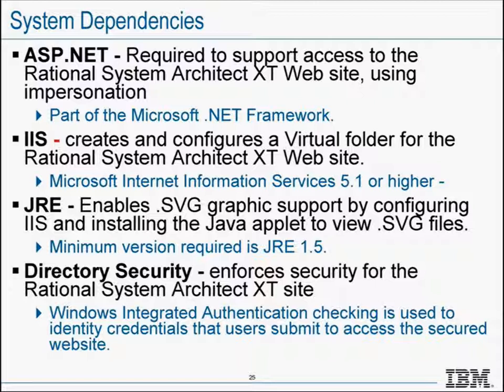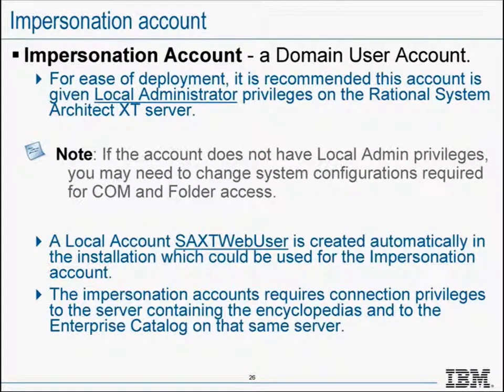Another component required is an impersonation account — a domain account designated to be used by System Architect, configured for ASP. For ease of deployment, it is recommended that this impersonation account is given local administrator privileges on the SAXT server. If local administrator privileges are not provided, additional post-configuration will be needed to allow system configurations such as COM and file folder access to this impersonation account. Granting local administration reduces the amount of post-configuration required.